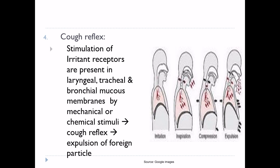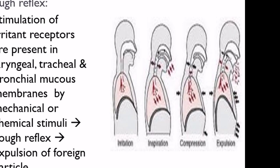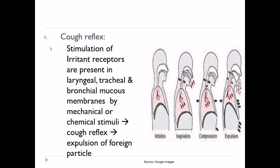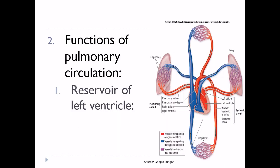To recap lung defense functions: first, immunoglobulin A; second, ciliary escalator action; third, pulmonary alveolar macrophages; and fourth, cough reflex. Now the second non-respiratory function is the function of pulmonary circulation.